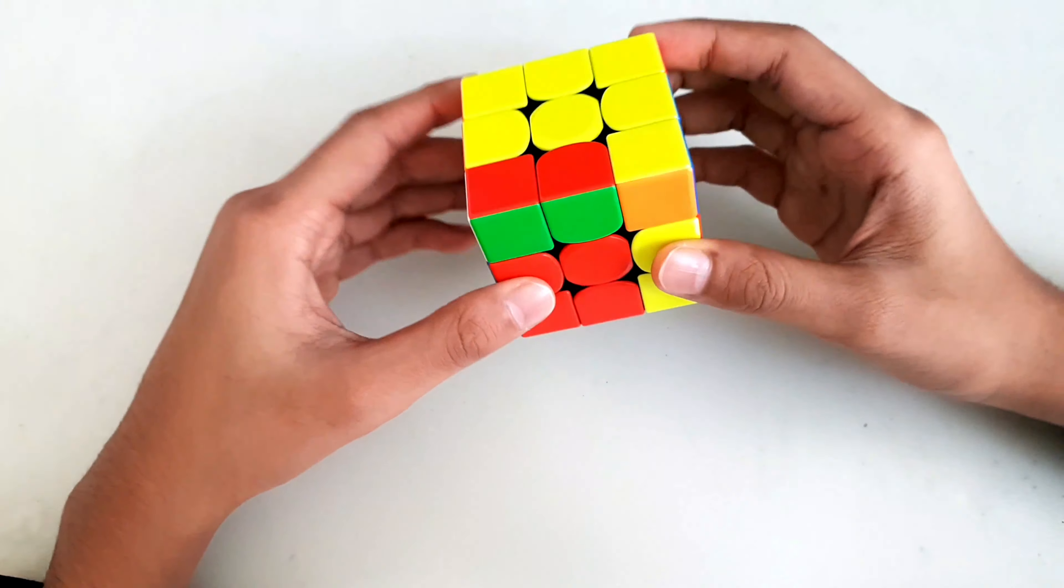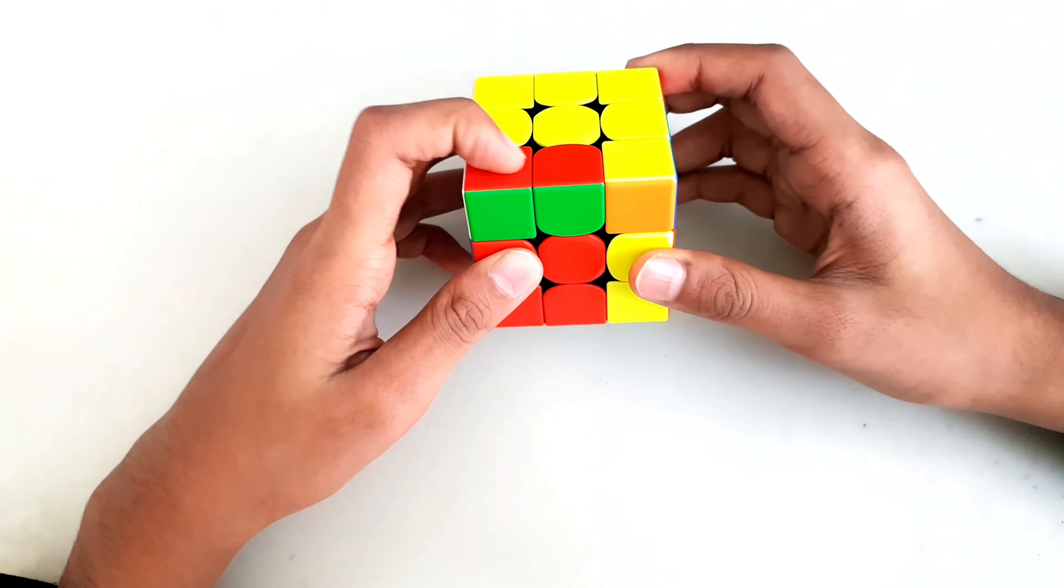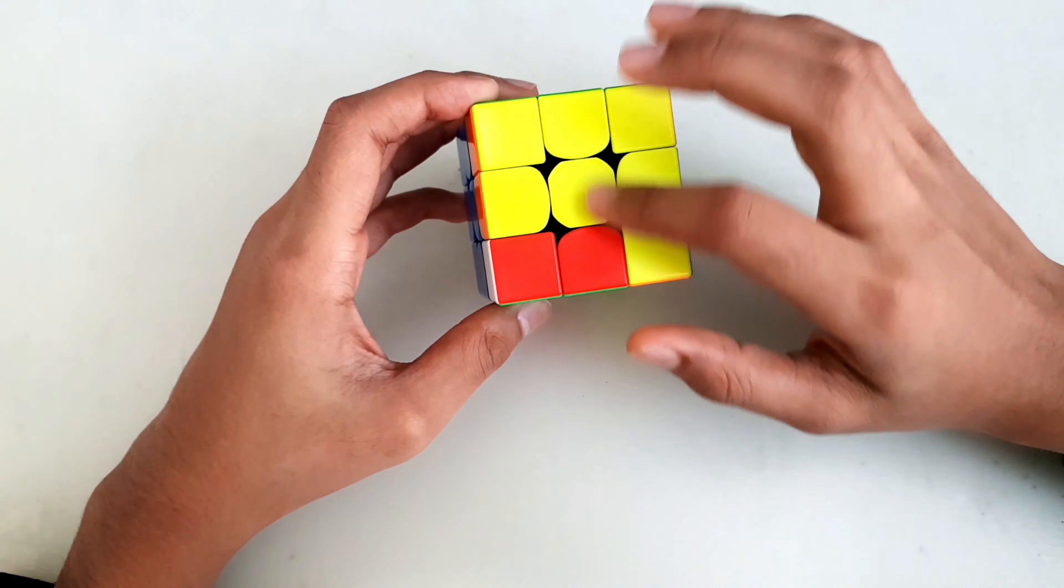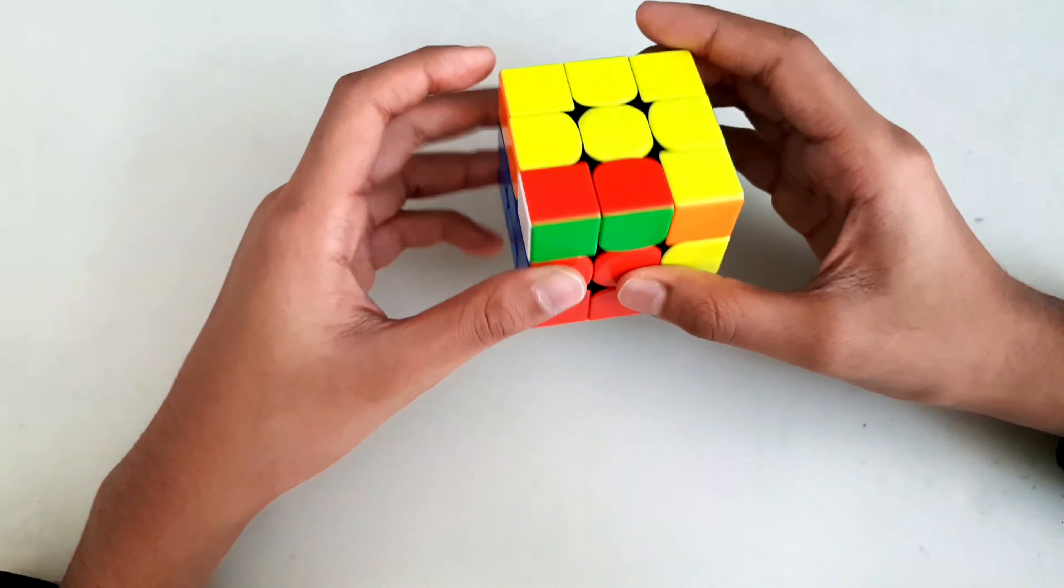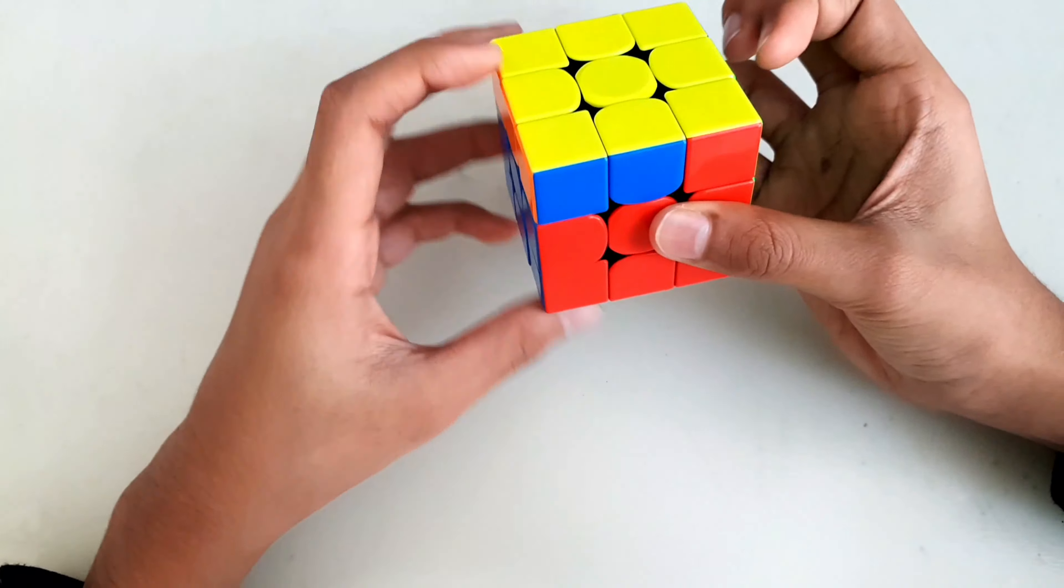Winter variation is something like this: you have the F2L pair done and all three edges on the yellow side done. Then you can just do an algorithm to solve the F2L piece and the OLL with that.